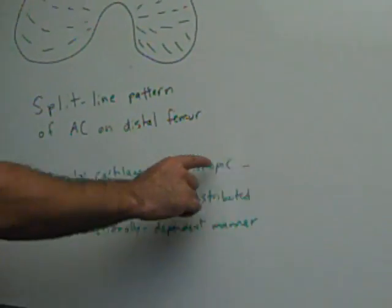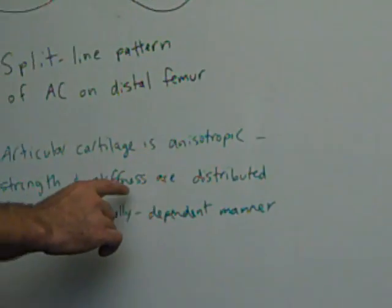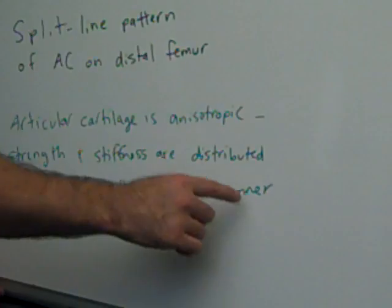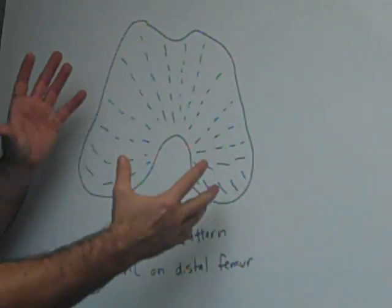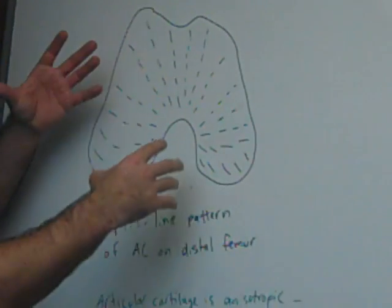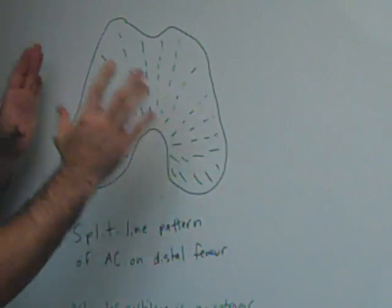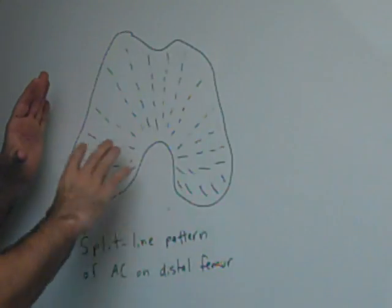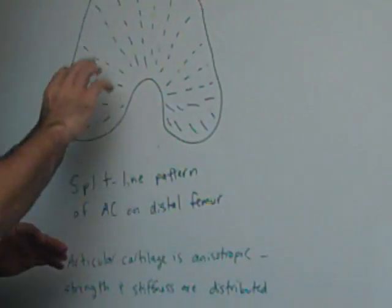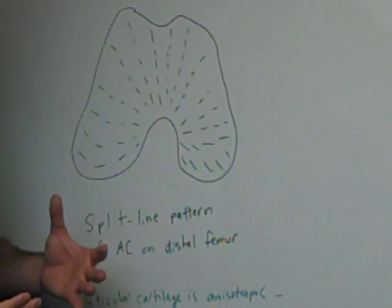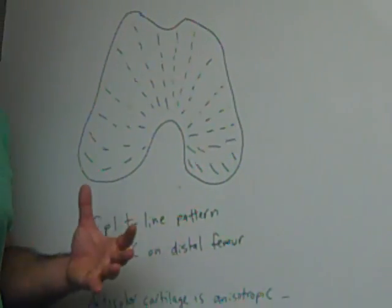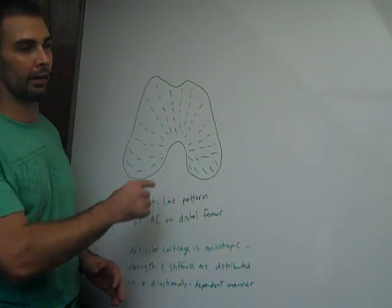If you read here, articular cartilage is anisotropic, which means the strength and the stiffness are distributed in a directionally dependent manner. The lines of collagen and the way that the cartilage adapts over time is to prevent and distribute forces properly. So this is how soft tissue throughout the body can adapt over time depending on the loads that are placed upon it. So I found that interesting as well.